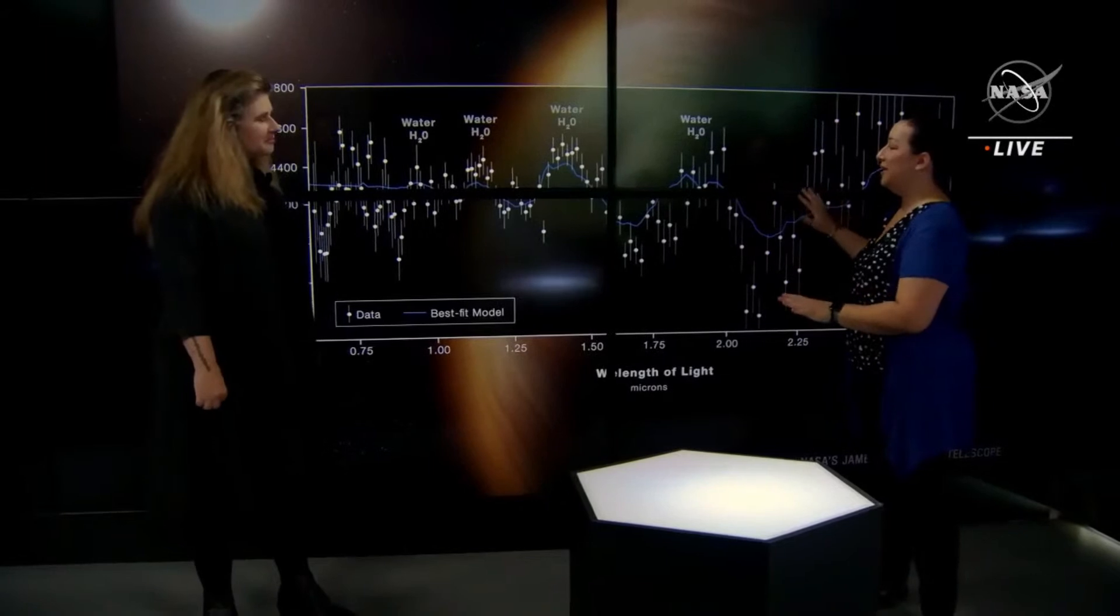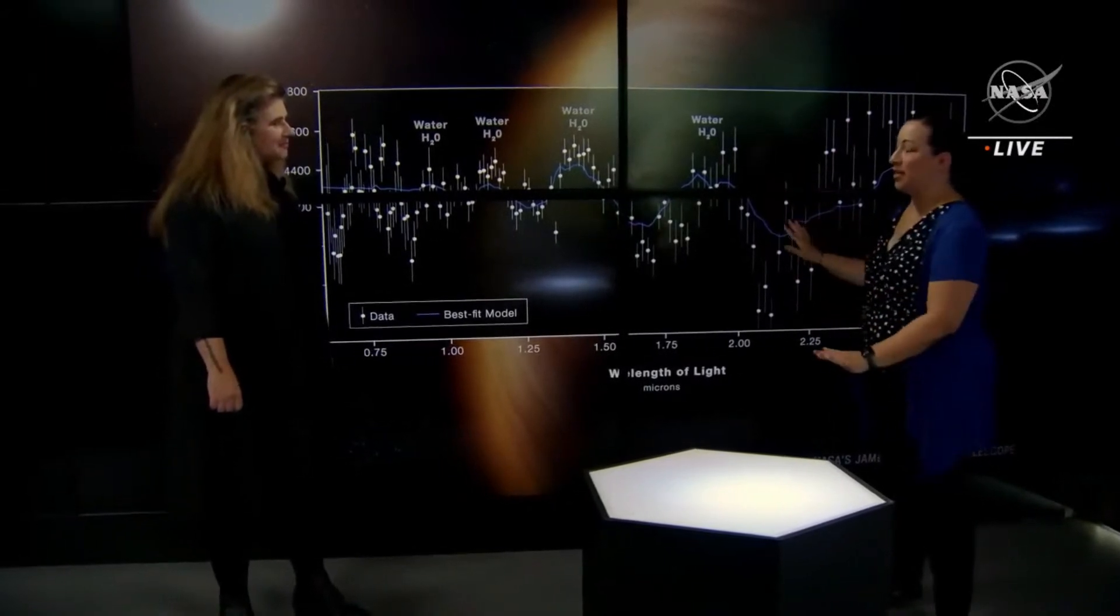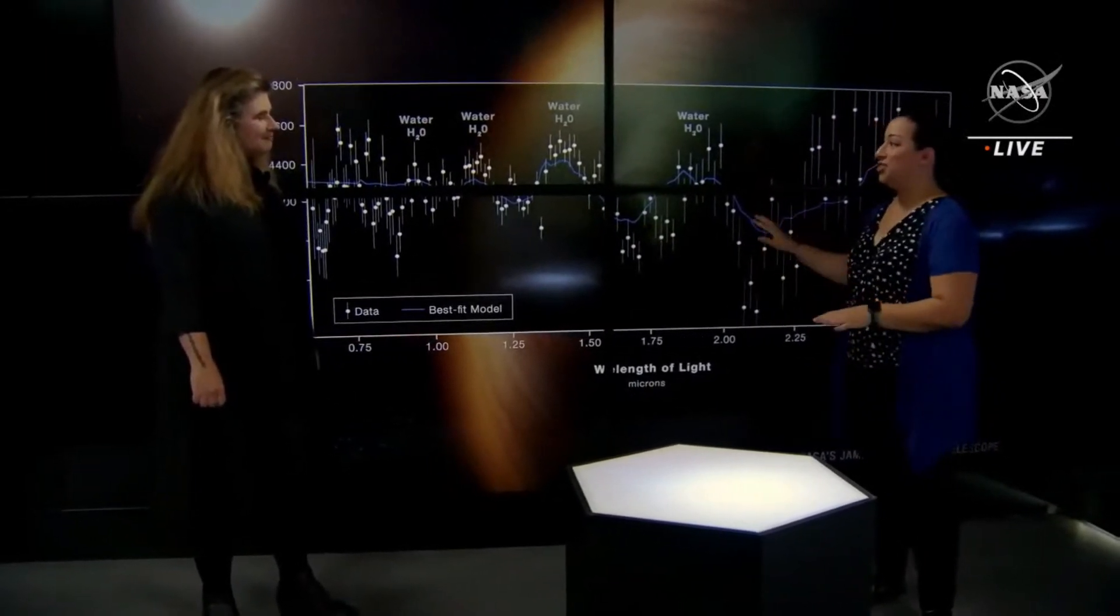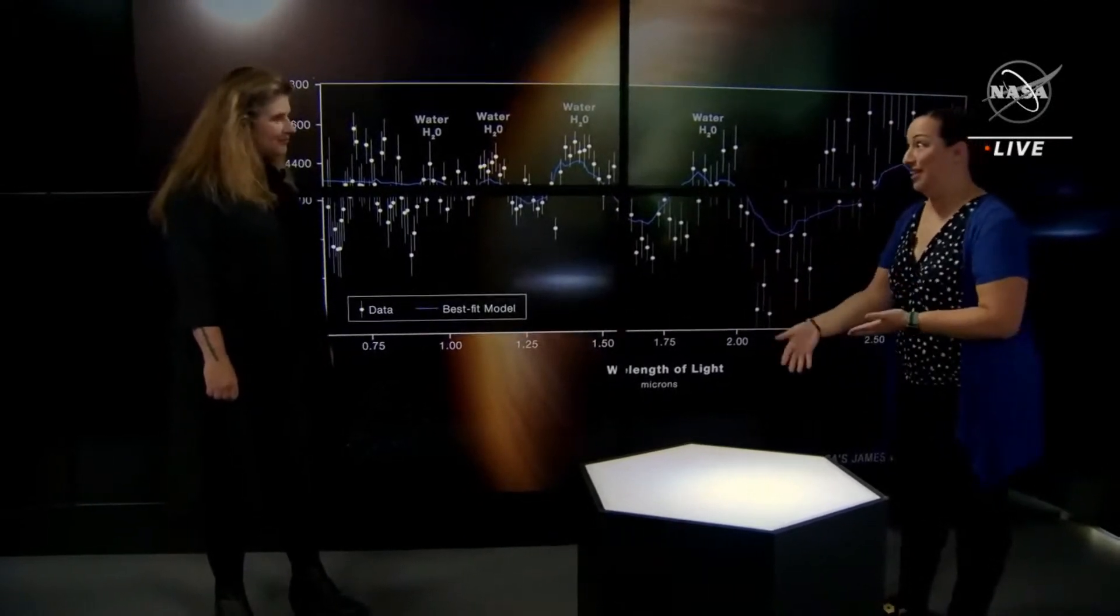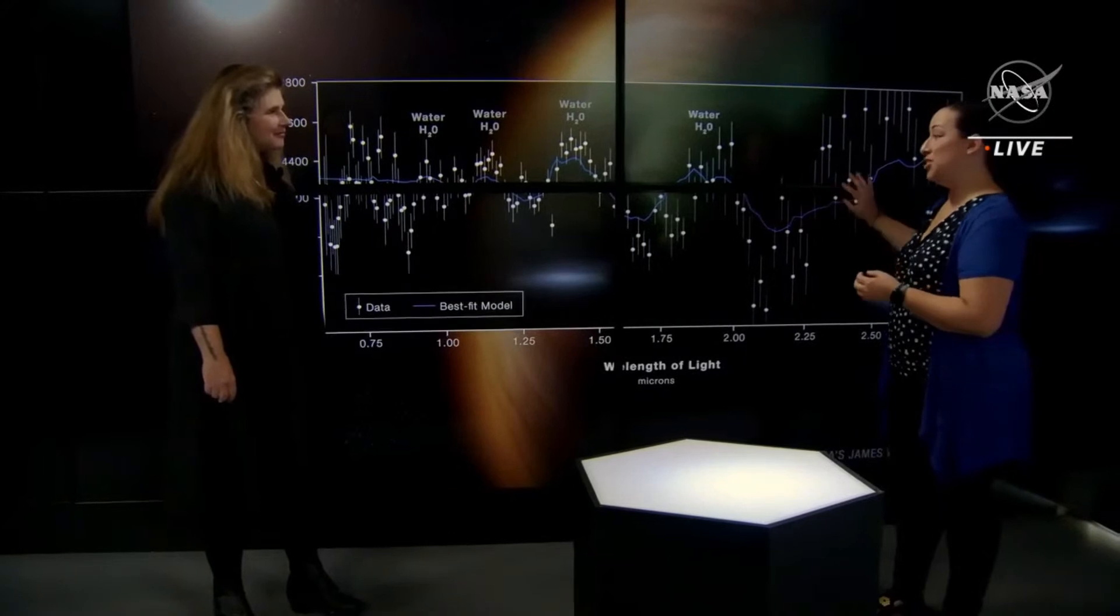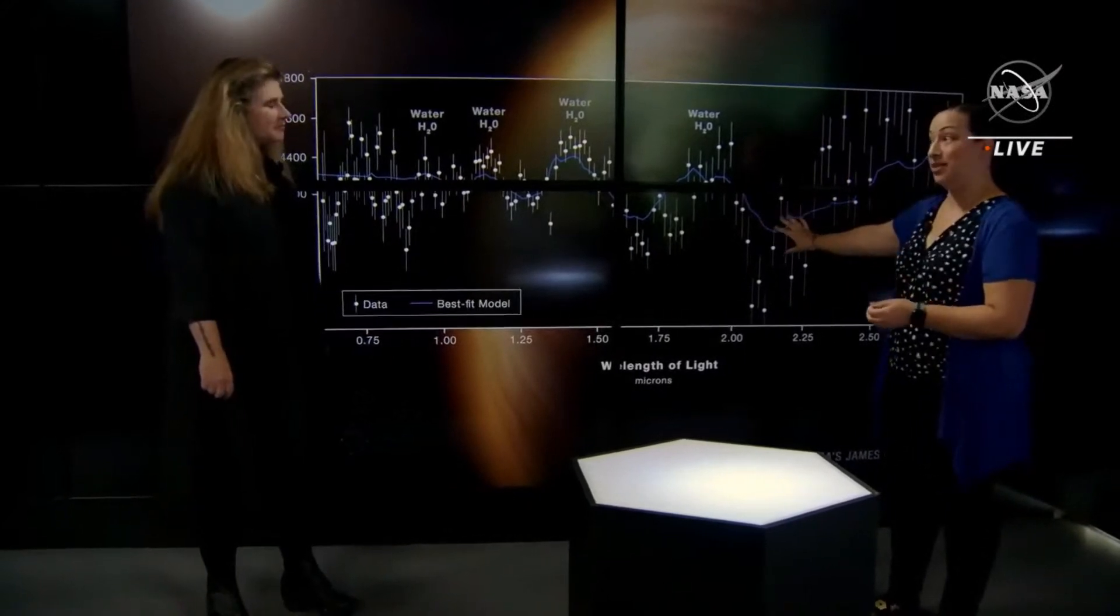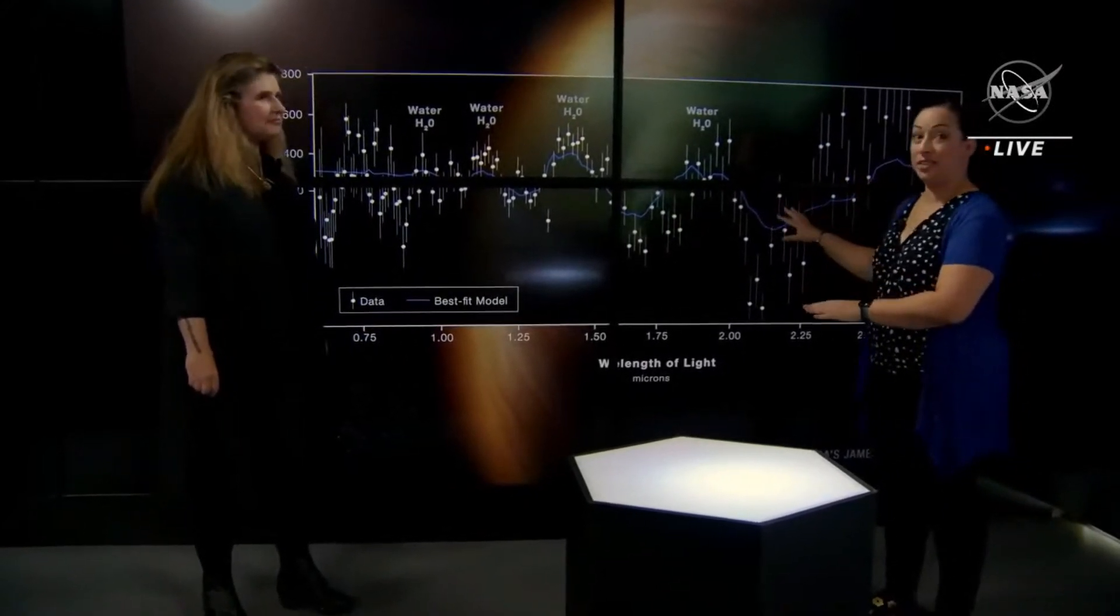Because what we're seeing is, again, the first exoplanet data from Webb. And this is just the beginning. We're going to start pushing down to further smaller planets and being able to take measurements just like this with the NIRISS instrument that was built by the Canadian Space Agency.